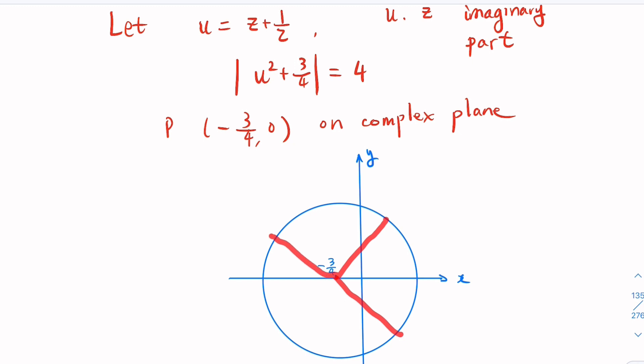Which means this is a circle. So what we know is that u squared is on the circle. For the u squared modulus, what is the biggest u squared? This is the biggest u square that has the biggest modulus.